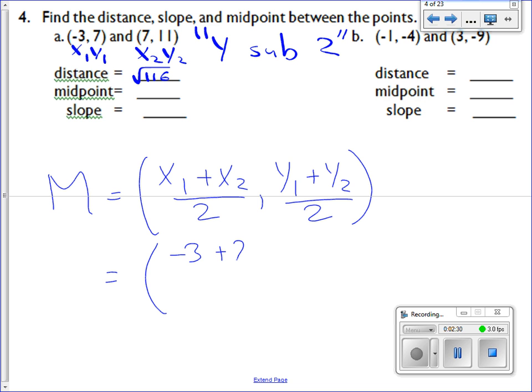So what's the sum of the two x values? Negative 3 plus 7. We'll get the sum on the next line. The two y values: 7 plus 11 divided by 2. Next, let's write our answer here. So what's negative 3 plus 7?